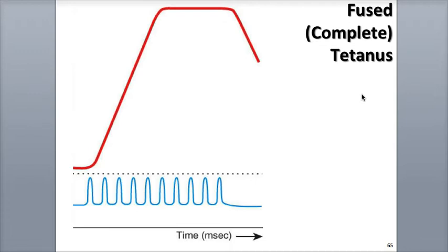In fused tetanus, a muscle fiber is excited by stimuli occurring much more rapidly at rates of 80 to 100 times per second. The muscle fiber cannot relax, which results in a steady extended contraction. In contrast to unfused tetanus, the twitches in fused tetanus cannot be seen in a myogram.